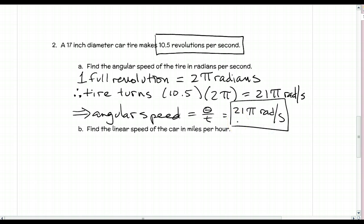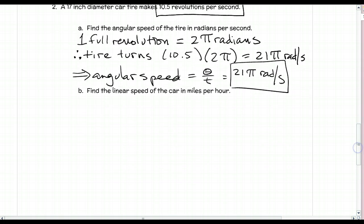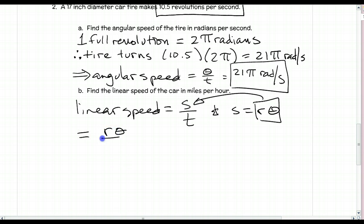For part B, linear speed equals s over t. Since s equals r times theta, substituting gives r theta over t, or r times theta over t. Notice theta over t is our angular speed.